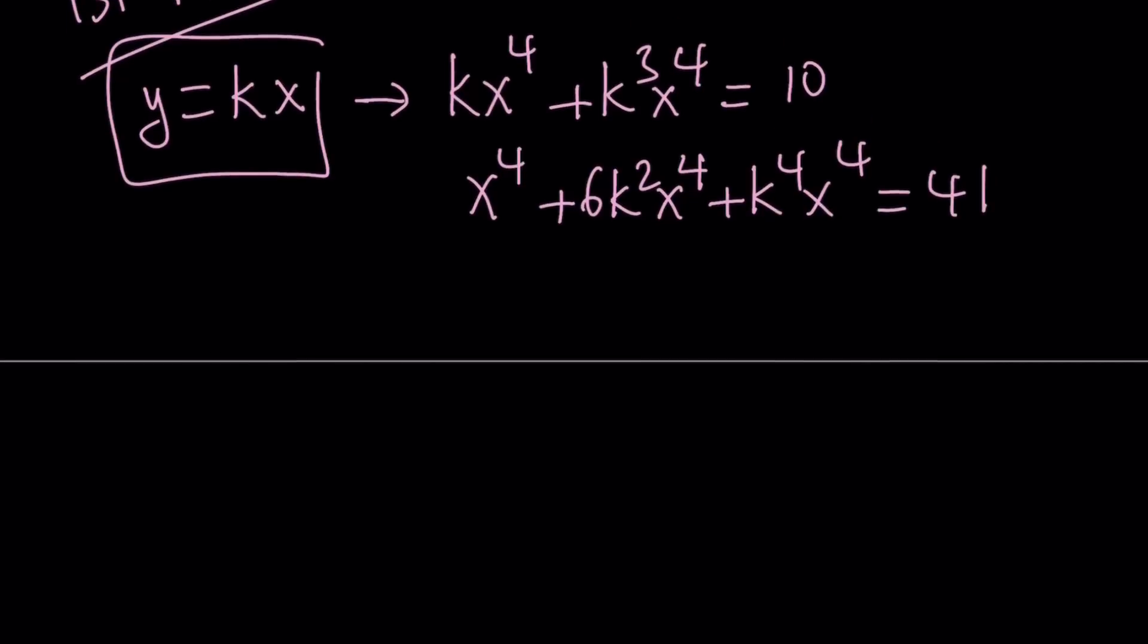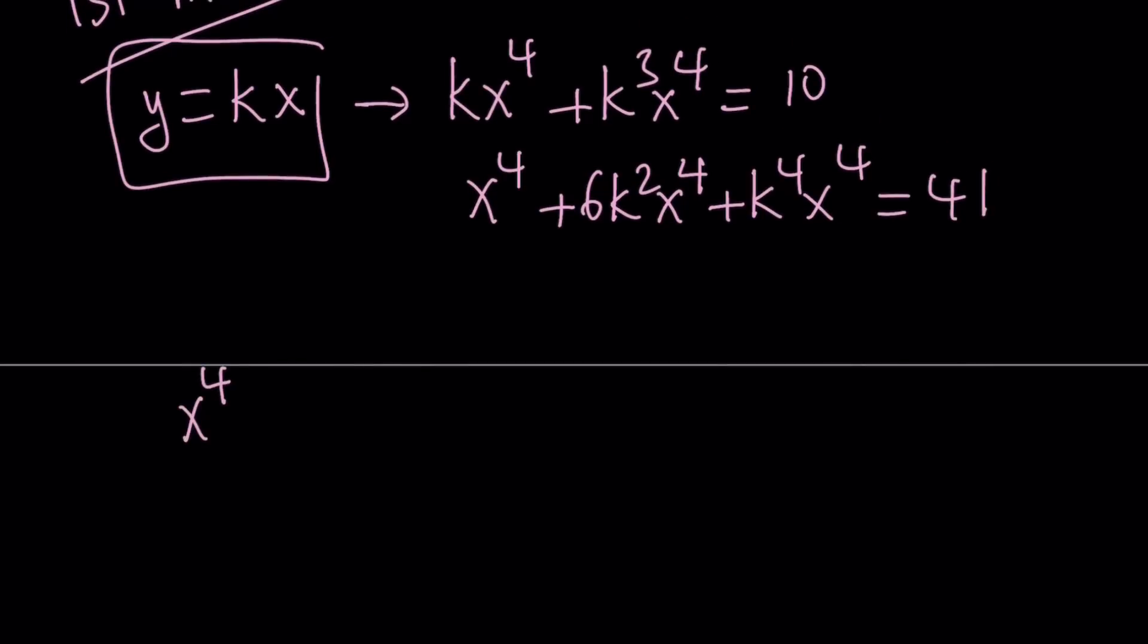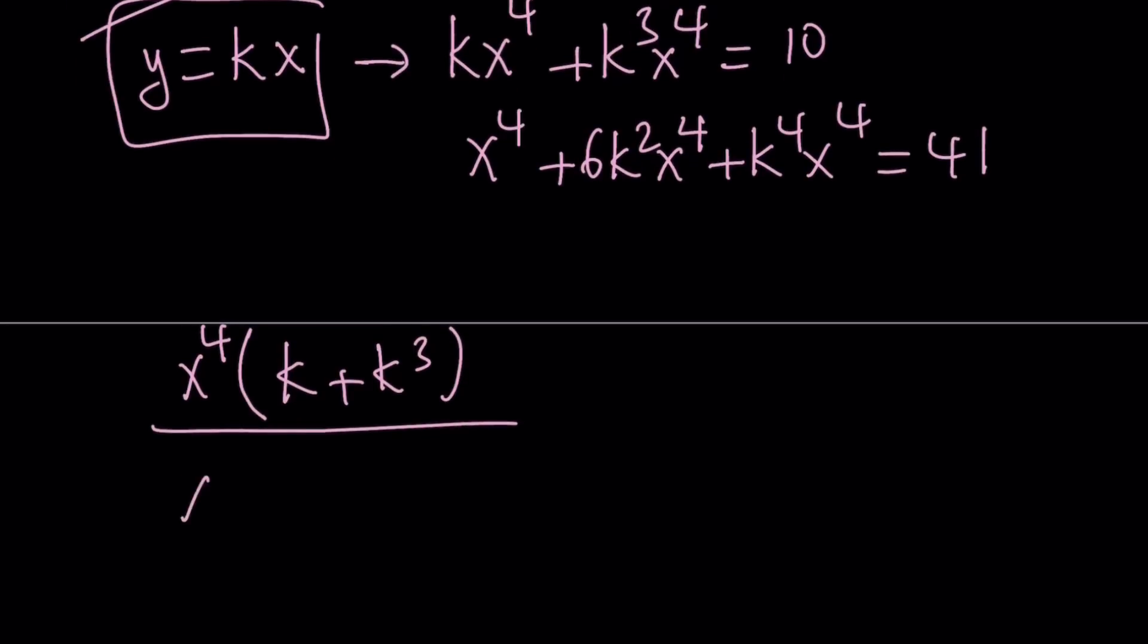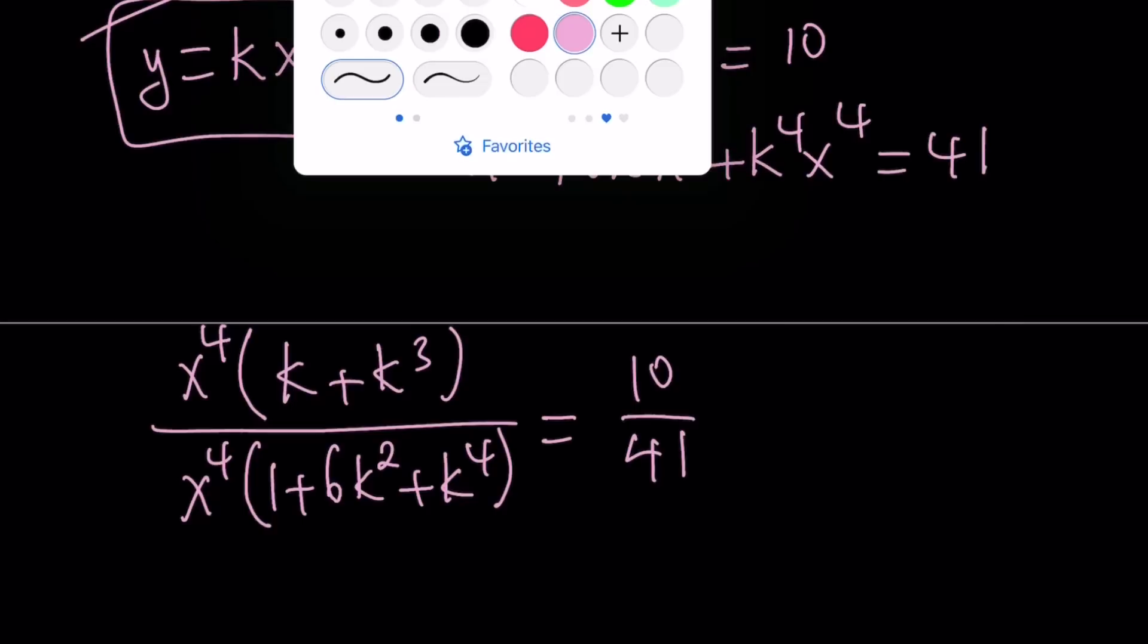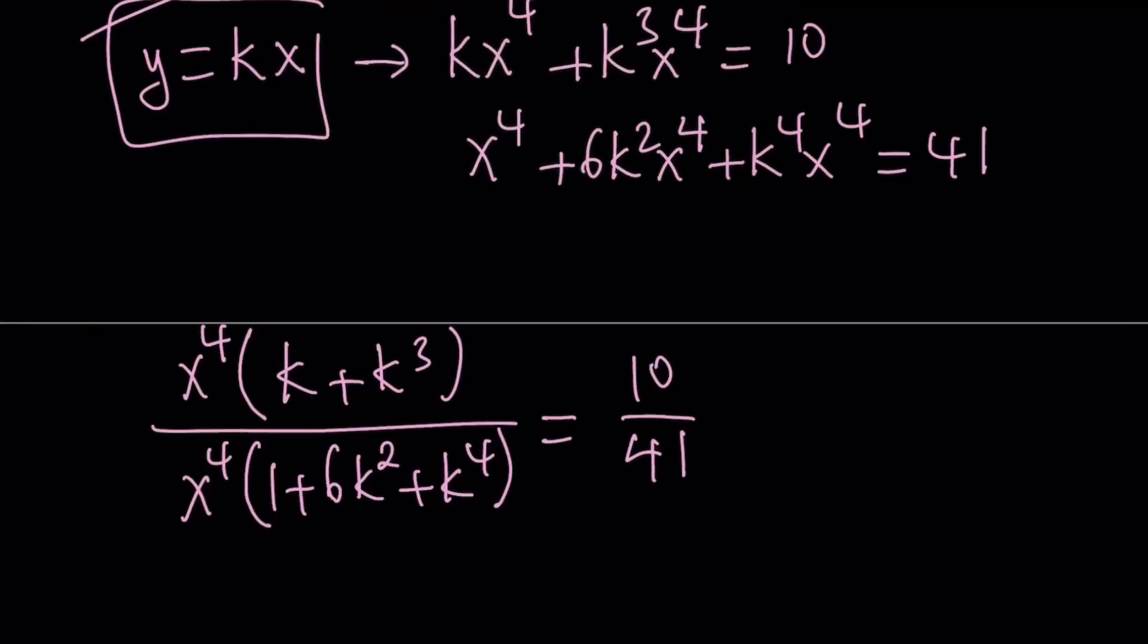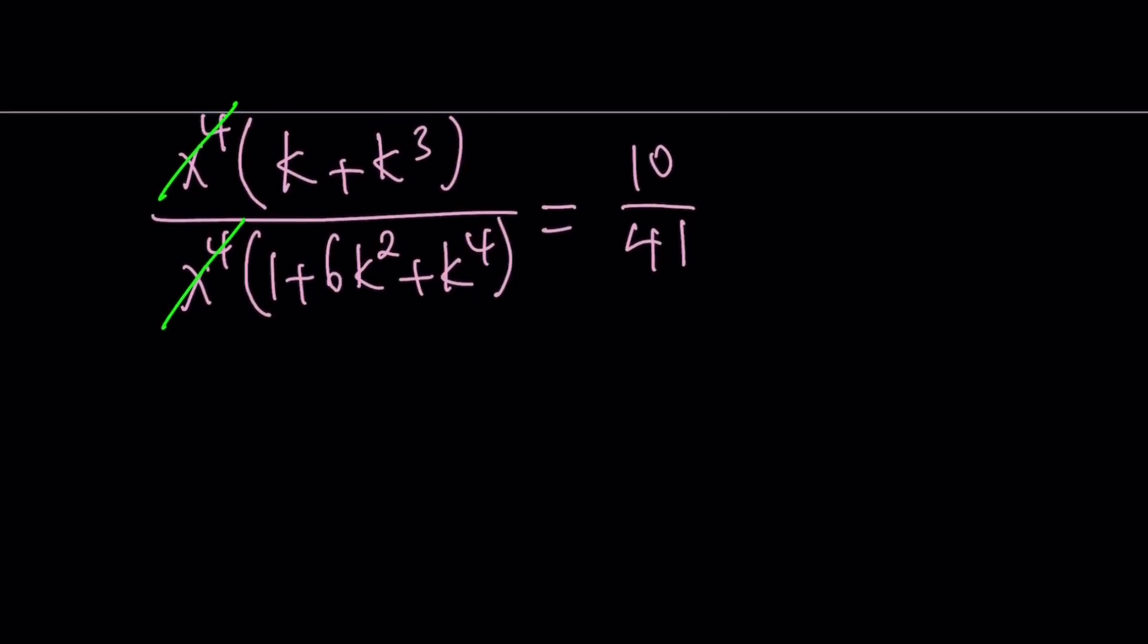So the only thing that I did was replace y with kx and do it in both equations. Now let's go ahead and factor out the x to the fourth. From the first one, we get k plus k cubed. And then I'm going to go ahead and divide it by the second equation. And x to the fourth can be taken out again. 1 plus 6k squared plus k to the fourth power. And since I'm dividing both of these equations side by side, I get 10 over 41.